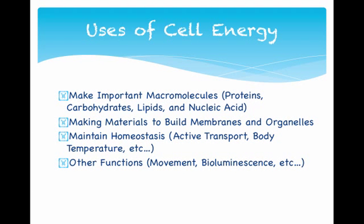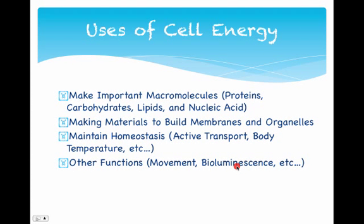How do we use cell energy? We talked about moving things across membranes, but we also need to make important macromolecules like proteins. When you eat cow proteins, they need to be reconfigured to be human proteins — that takes energy. Making materials to build membranes and organelles takes energy too. Maintaining homeostasis — a key theme from unit one — through active transport, body temperature, and blood sugar all require energy. There are also other functions like bioluminescence: when you see a firefly blinking in the summertime, that takes energy. Movement, growth — when a plant grows from a seed, that all takes energy.